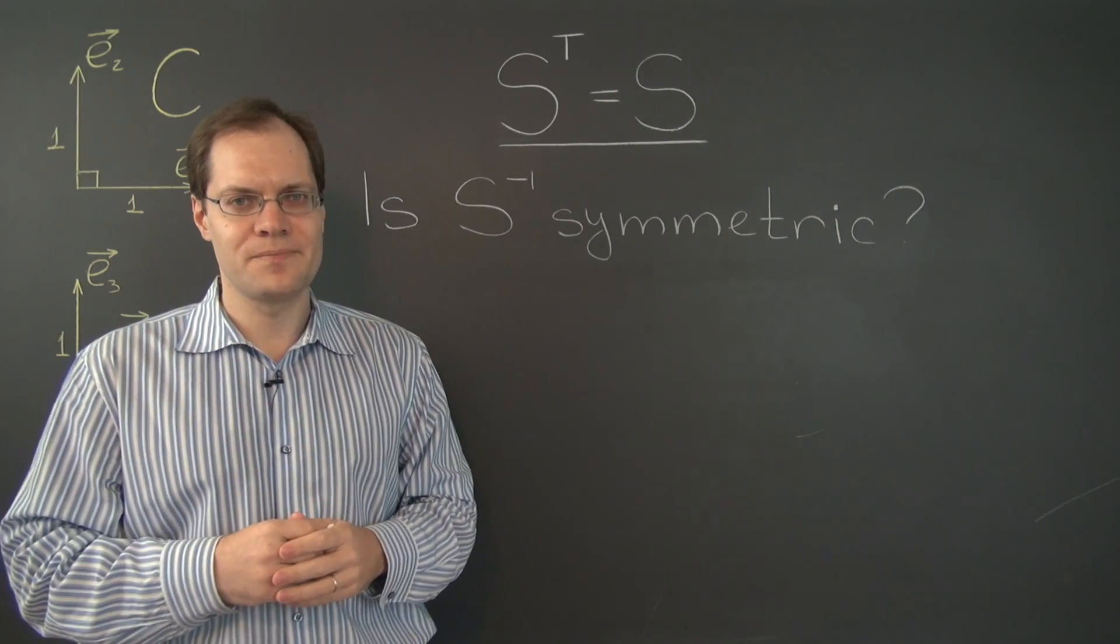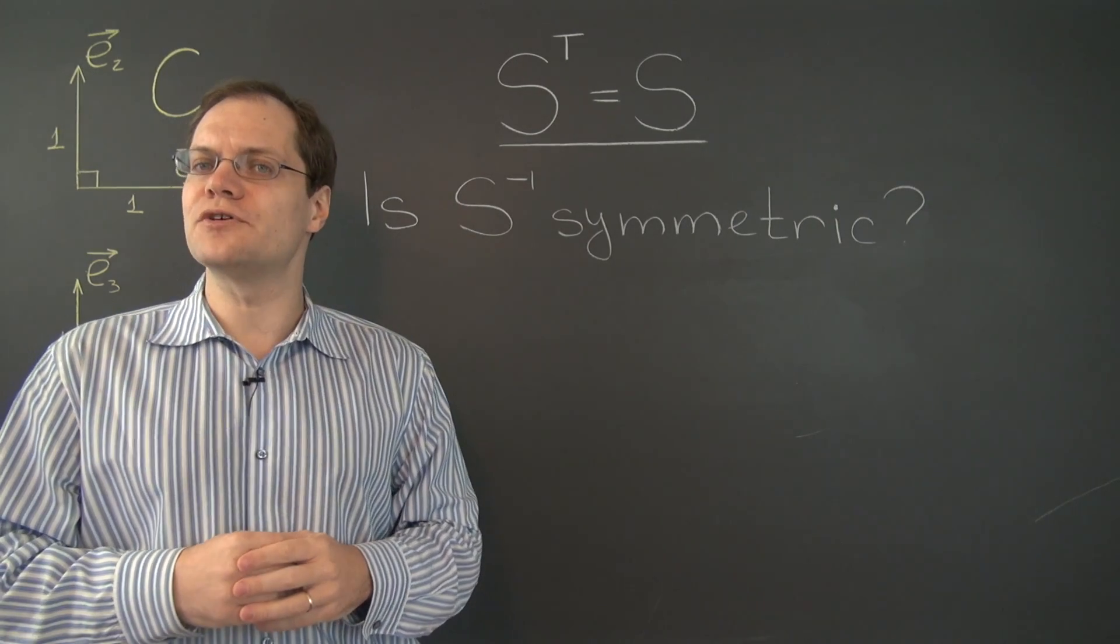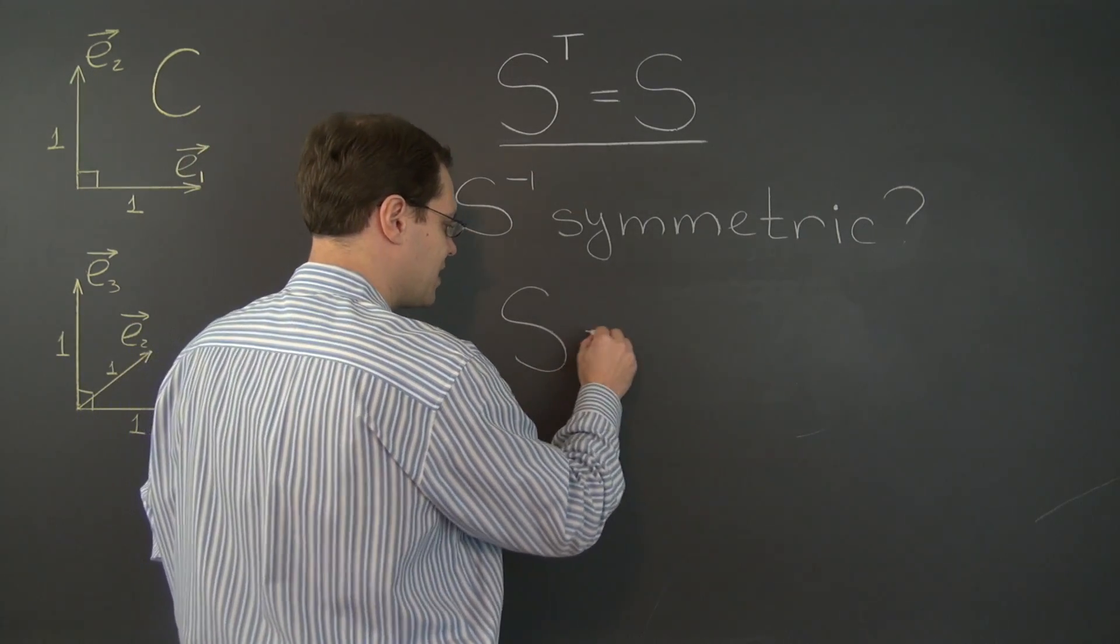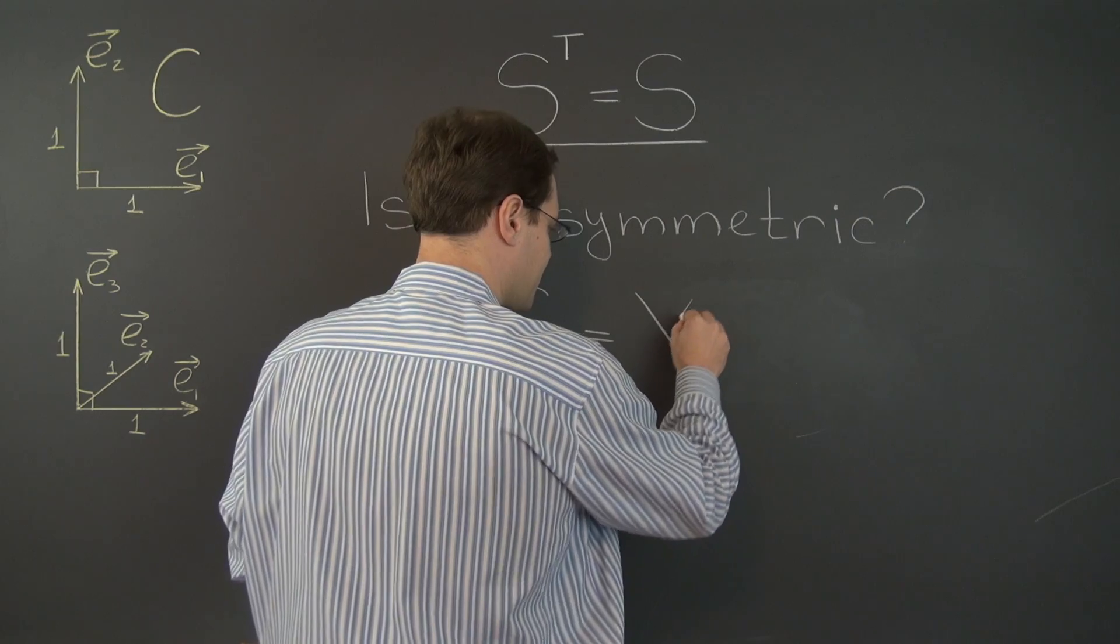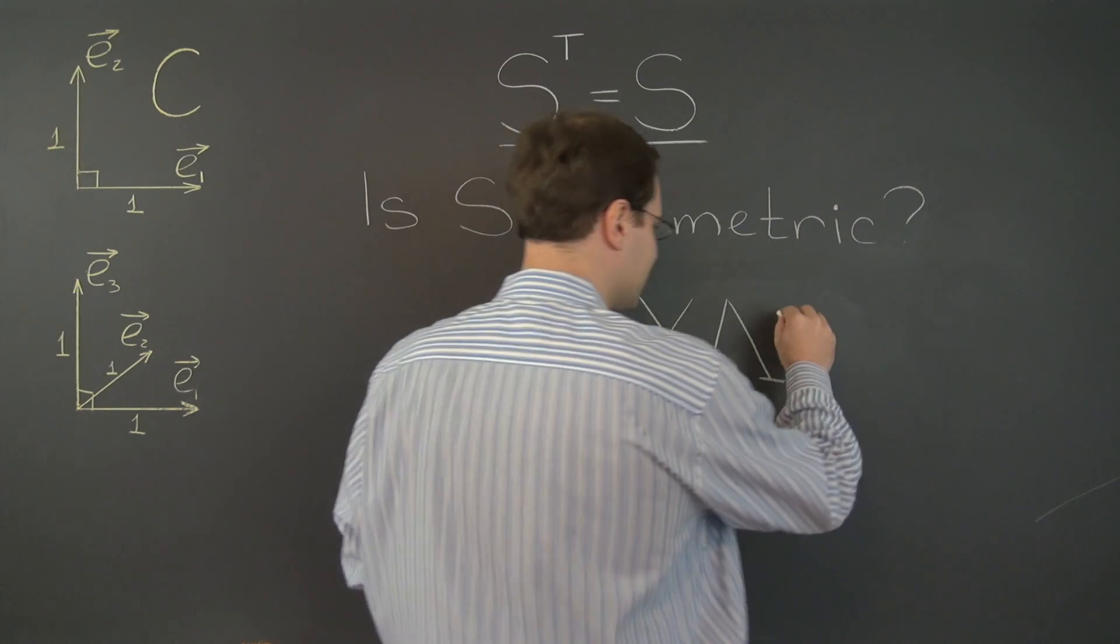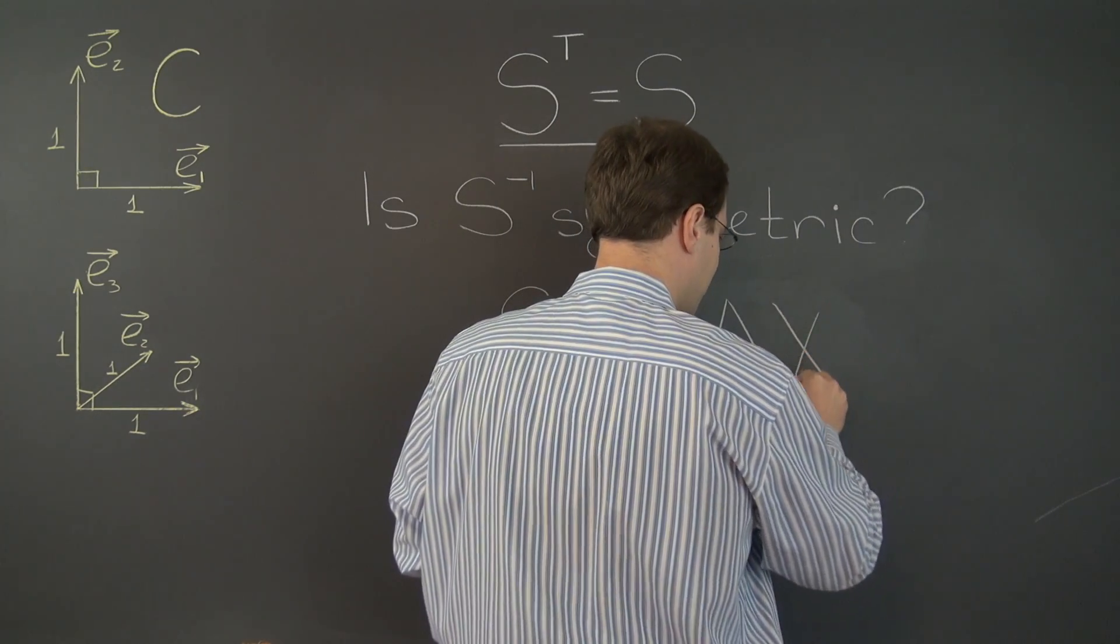As we just discovered, the eigenvalue decomposition for a symmetric matrix looks like this. S equals X times lambda, the matrix of the eigenvalues with the eigenvalues in the diagonal, times X transpose.